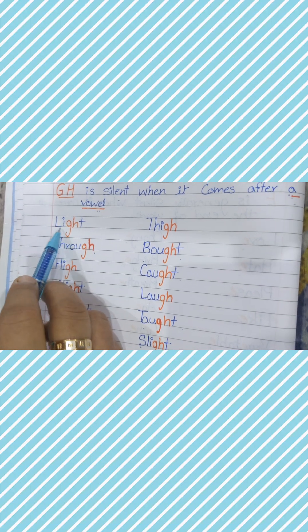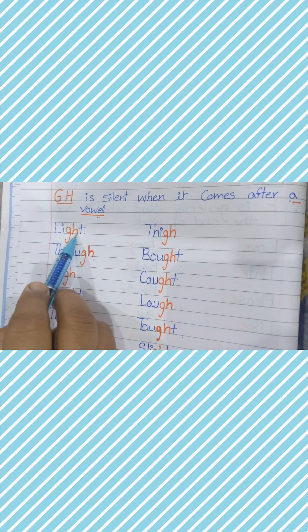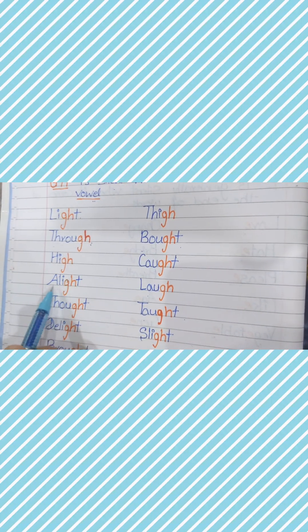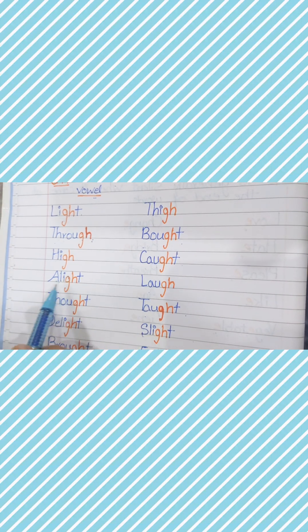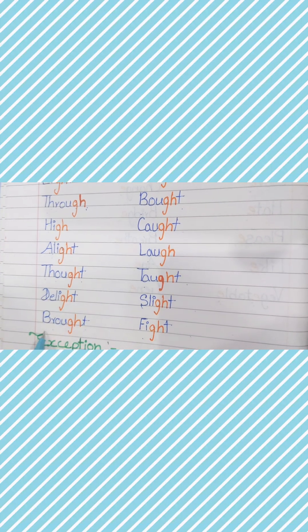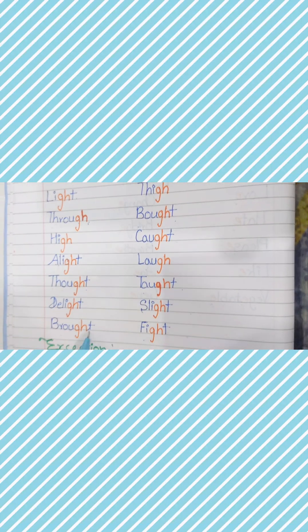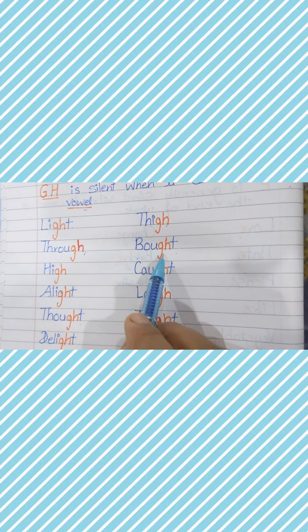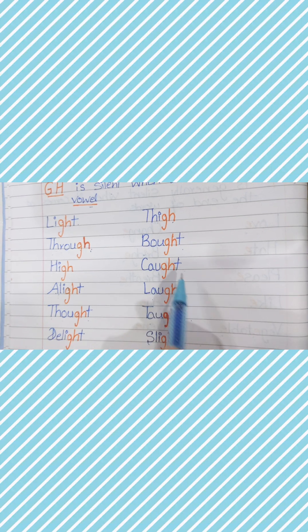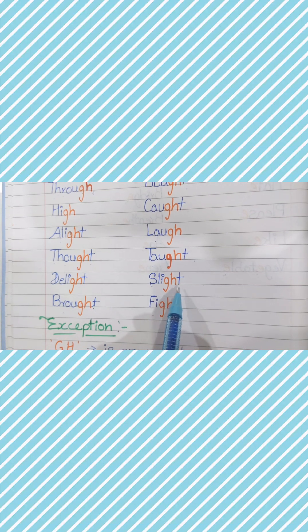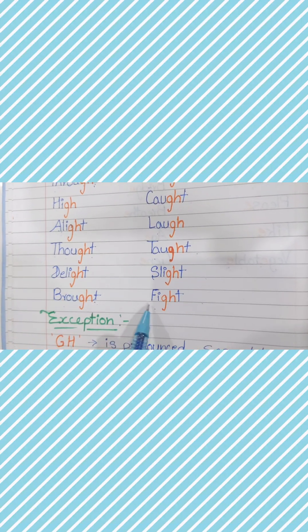In compound words, if we are going to pronounce GH, which is silent. Let's start. Light - GH is silent. Through - GH silent. High and light. Thought, delight, brought - silent. Thought, caught, laugh, thought, slight - GH is silent. Fight - GH silent.